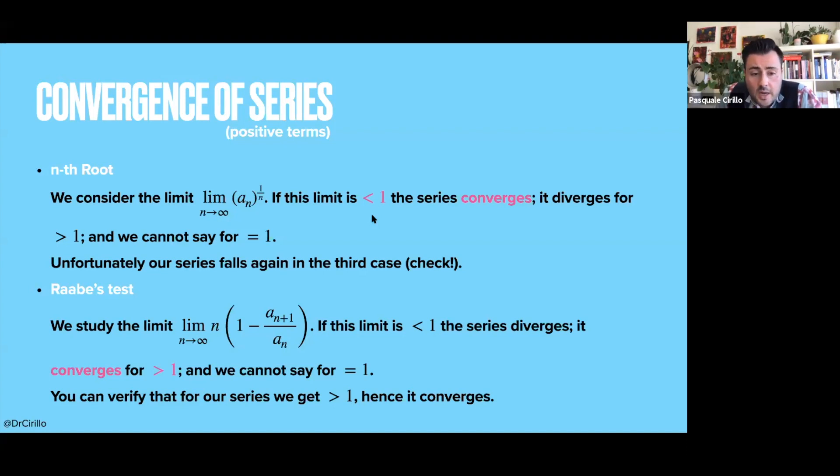Then you have the Raabe's test. In the Raabe's test, we use the limit that you see on your screen. So it's the limit for n of n times (1 - a_{n+1}/a_n). Here it is very important. So you see the colors on the screen. I use a lot of colors to point out things. Here you see that convergence is in the case of the limit being larger than one. So in the other cases, it was smaller than one. In this test, it is larger than one. And you can understand why, because we are essentially taking the minus in front, okay, with respect to the ratio test initially.